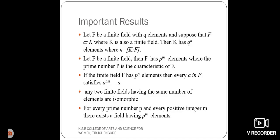Next, see the important results. Here, let F be the finite field with Q elements and suppose that F contained in K where K is also finite field. Then K has Qⁿ elements where N equals [K:F]. Second one, let F be the finite field, then the finite field contains Pᵐ elements where P is the prime number. The prime number is the characteristic of F.